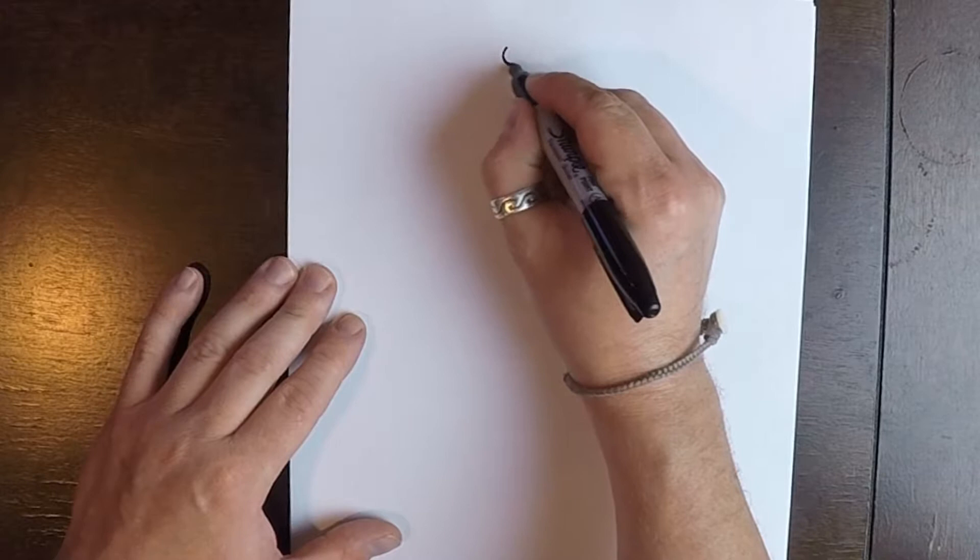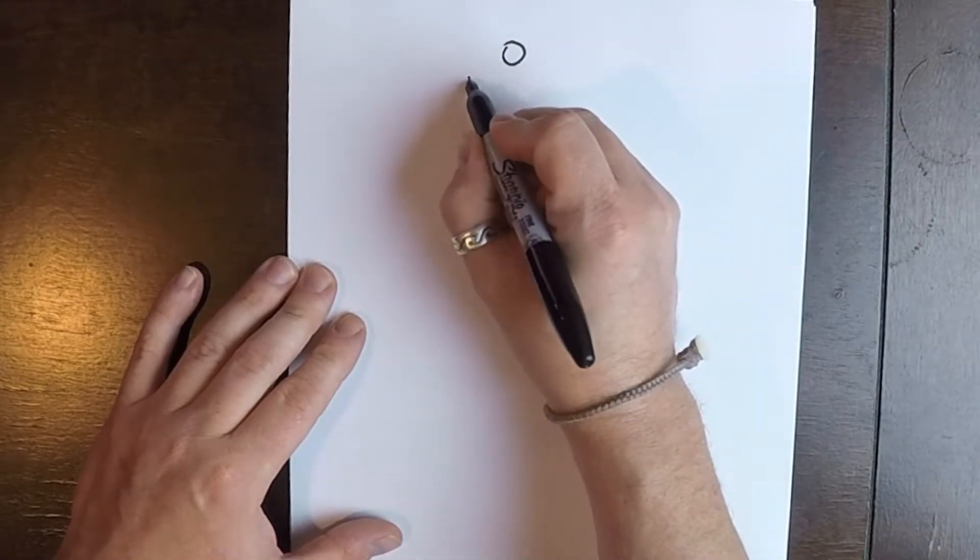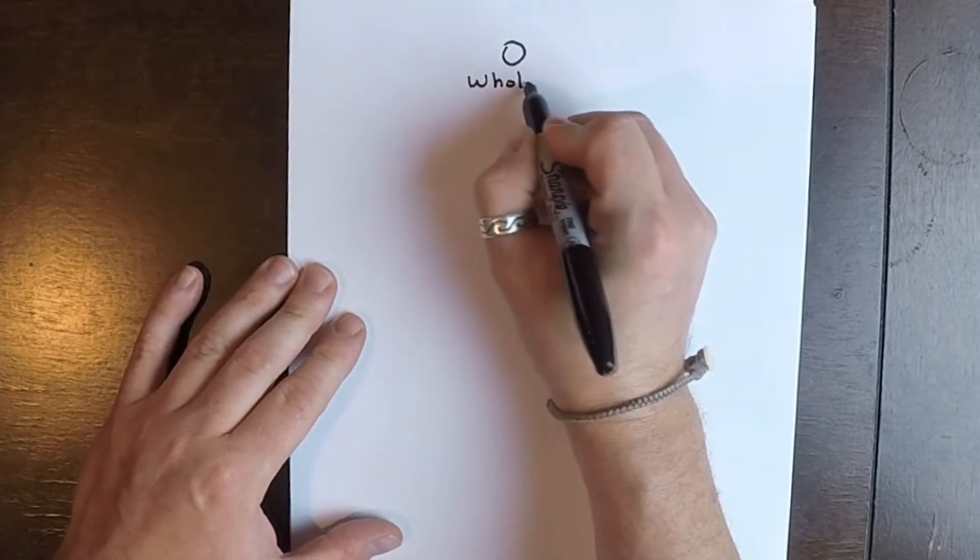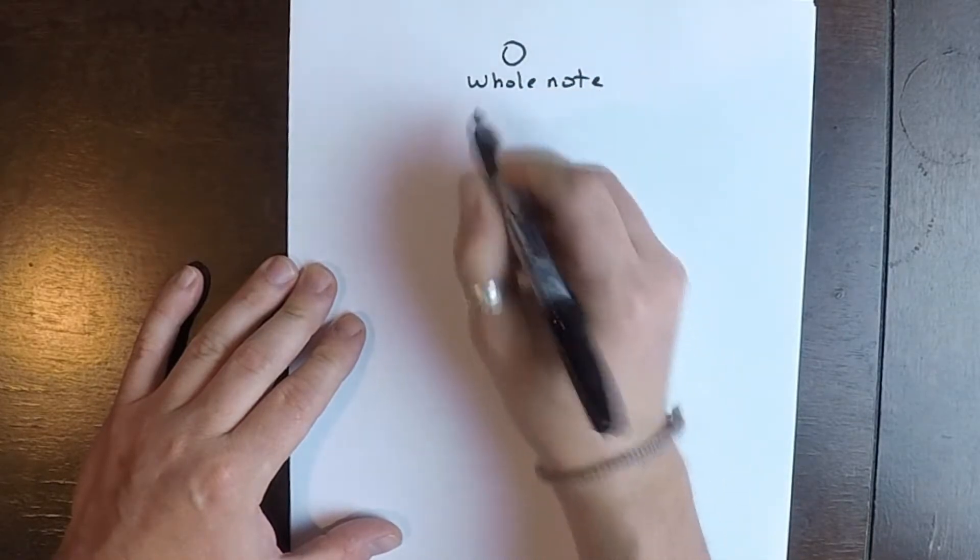Alright guys, let's get started. Thanks for checking this video out. We're going over the rhythm tree. First, we're going to start out with a whole note. That whole note gets four beats.